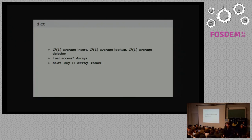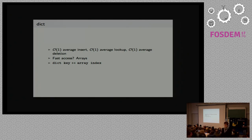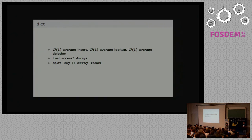So what do they give us? Average constant time insertion, lookup, and deletion — so everything is super fast. How can you do that using arrays? Dictionaries have keys that are Python objects, but arrays have indices that are integers. So we need to find a way to transform objects to integers, and that's where hashing comes in.